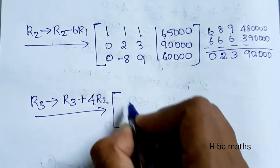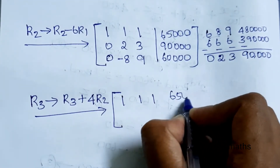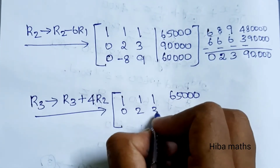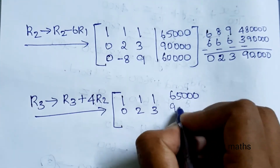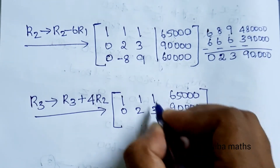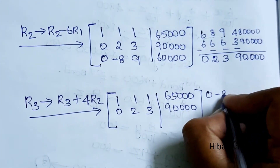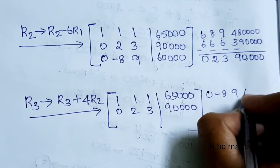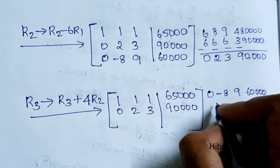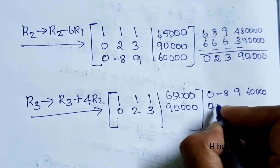After the row operation R3 → R3 + 4×R2, the matrix rows become: R1: 1, 1, 1 | 65,000; R2: 0, 2, 3 | 90,000; R3: 0, -8+8, 9+12 | 60,000+3,60,000, giving R3 as 0, 0, 21 | 4,20,000. This gives us the upper triangular form needed for back substitution.